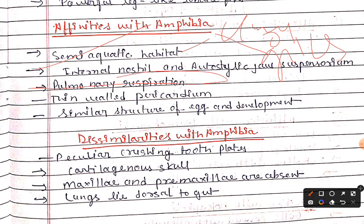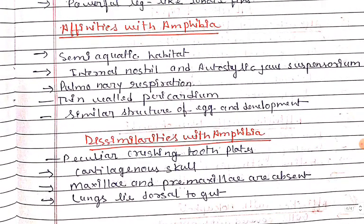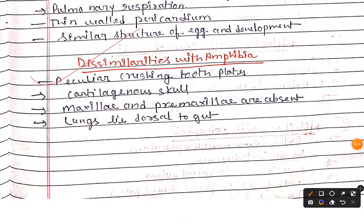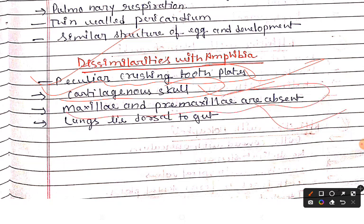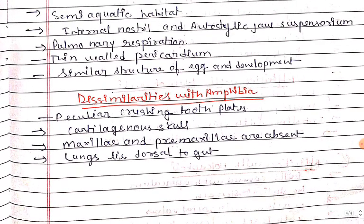Affinities with Amphibia: pulmonary respiration, respiration through gills, thin-walled pericardium, similar structure of egg and development, and a similar pattern of development like Amphibia. Dissimilarities with Amphibia: peculiar crossing tooth plates in Dipnoi, cartilaginous skull while Amphibia have maxilla and premaxilla absent in Dipnoi, and lungs lying dorsal to the gut — this is a dissimilarity with Amphibia.